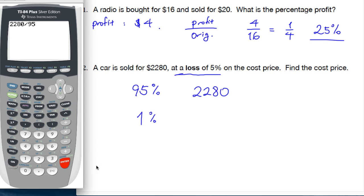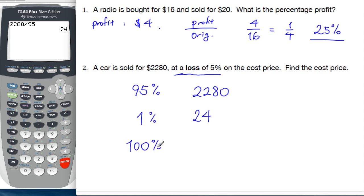Alright, so 1% is $24. And then we go to the original cost price, which is 100%. And that one, easy enough, $2,400. Alright, so think about what you know, go back to 1% and out to what you need.